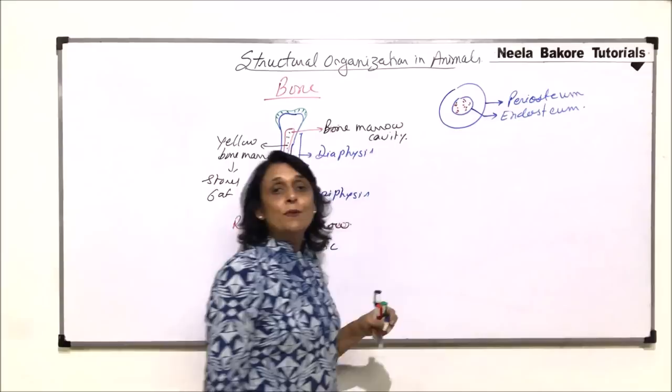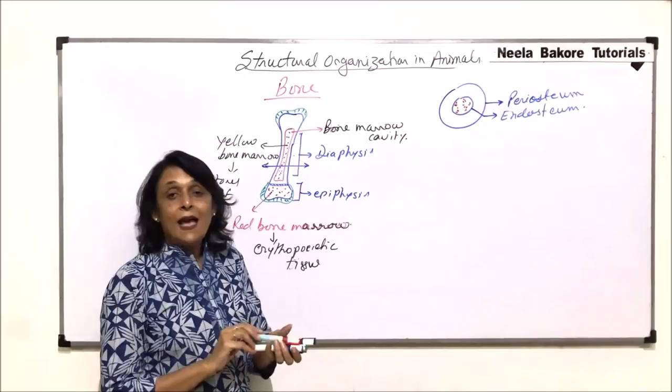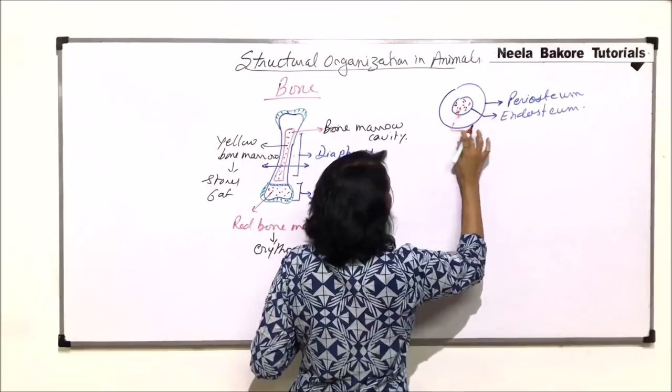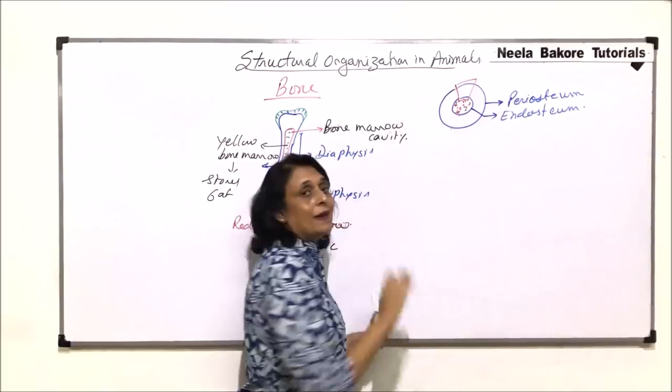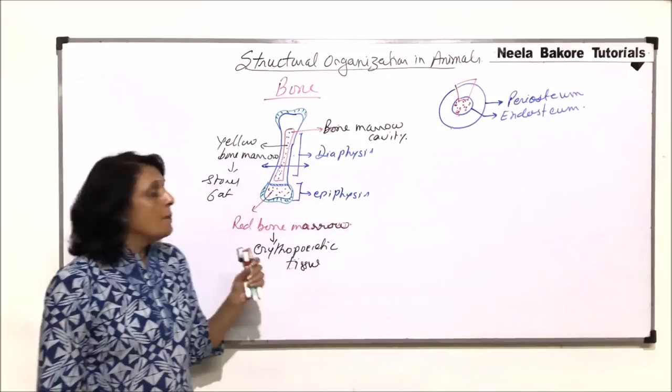These are the two fibrous layers. Now, to understand the structure of the bone, we will have to enlarge only this part. Or let me take this part, so that the orientation remains the same. We're just going to enlarge this part so that we are able to see the inner structure.